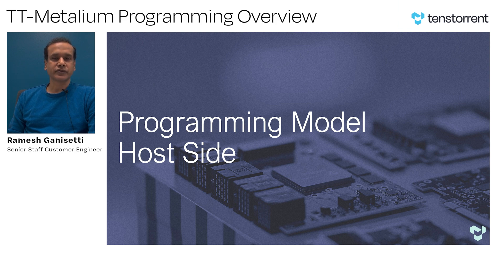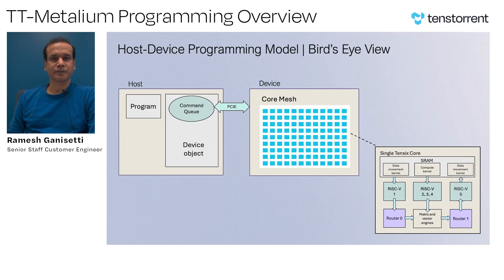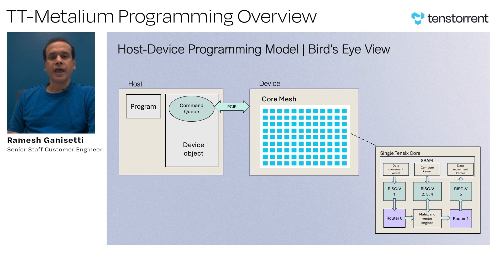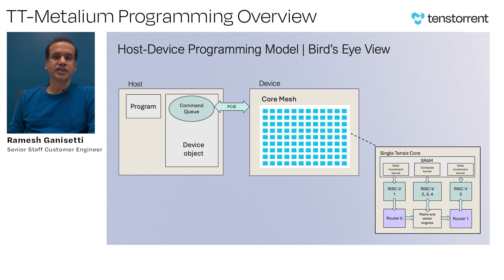Let's go through the programming model on the host side. As you can see here, the host and the device are connected through a PCI interface. The host program creates a device object which has a command queue, and the command queue is responsible for the communication between the host and the device. The device is a core grid, and all these cores are connected through a mesh topology. We call these cores Tensix cores. In this slide, I have shown one of the Tensix cores, and each Tensix core has its own SRAM, which we also call the L1 memory.